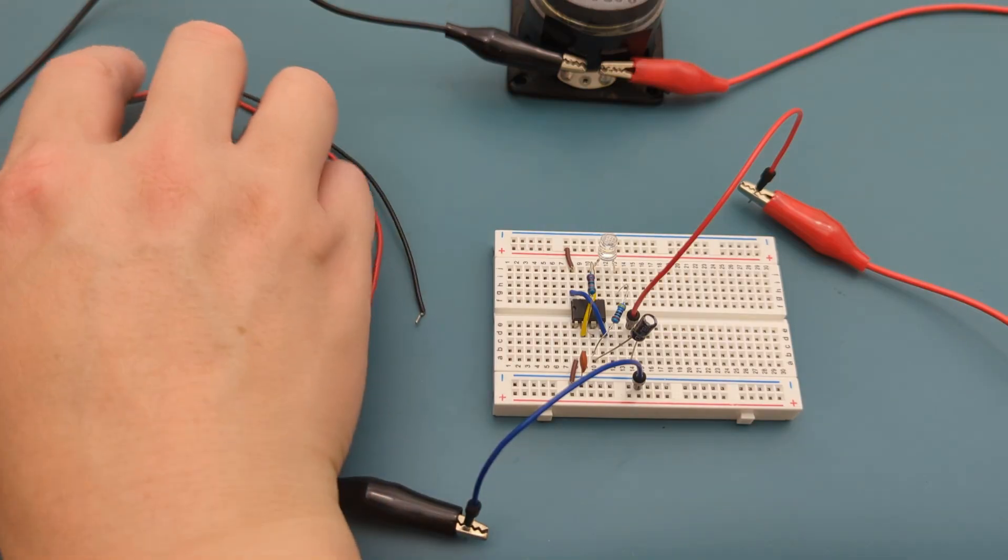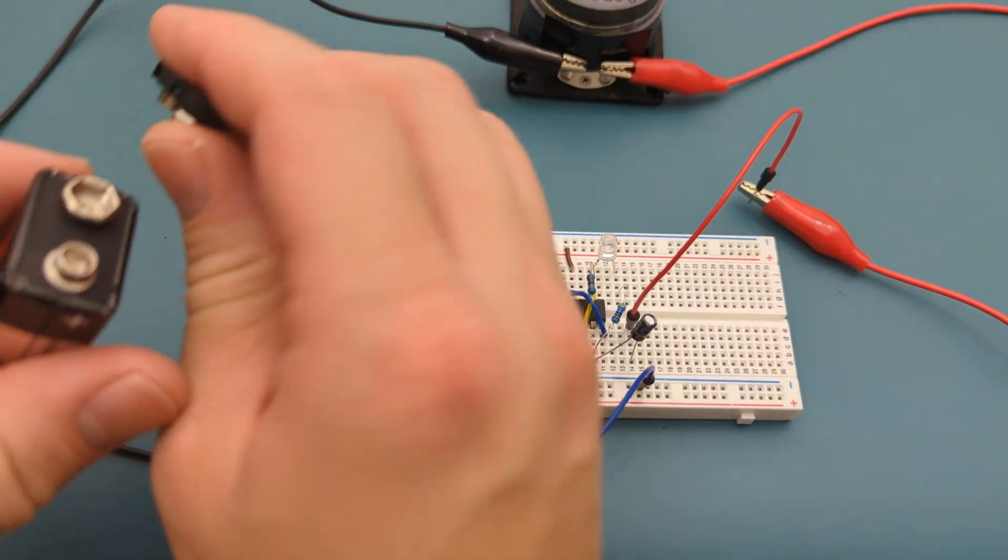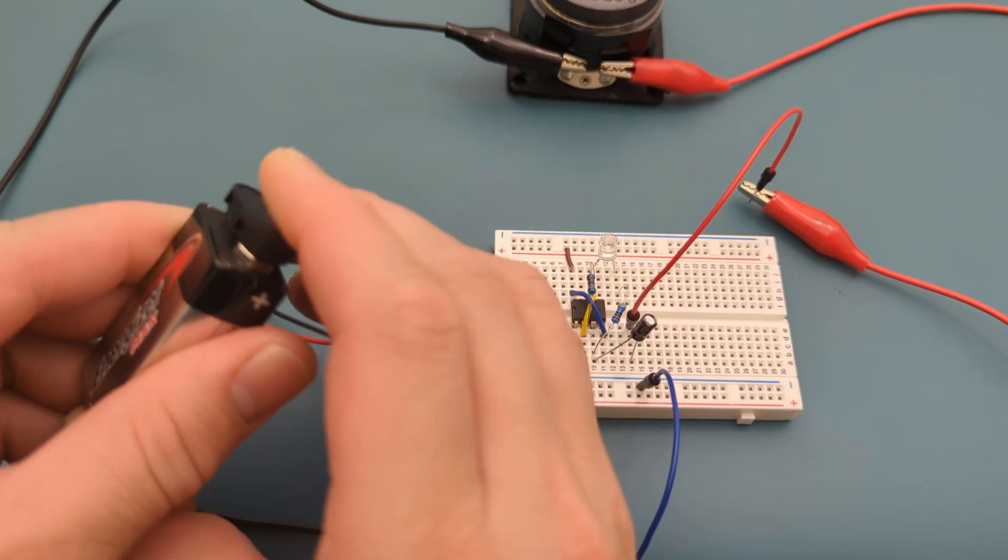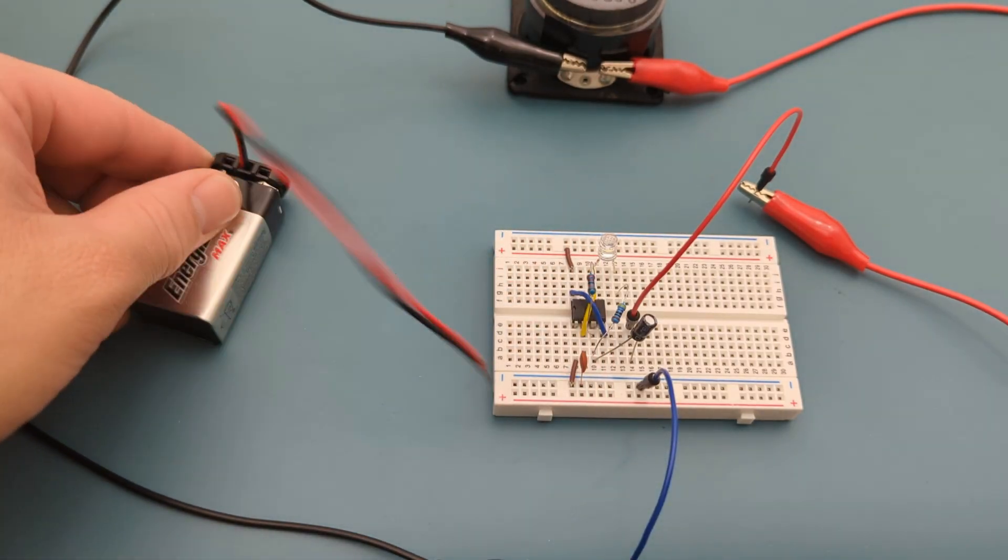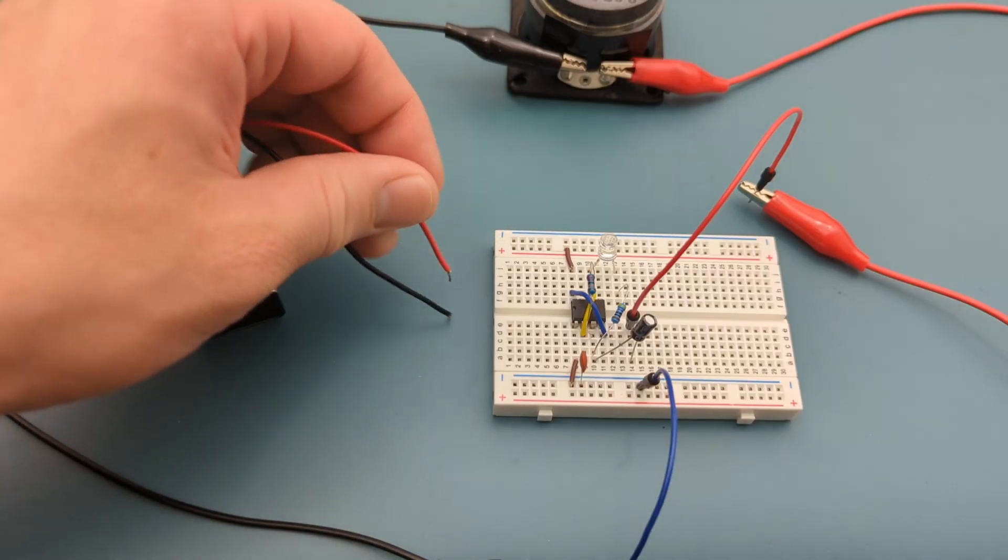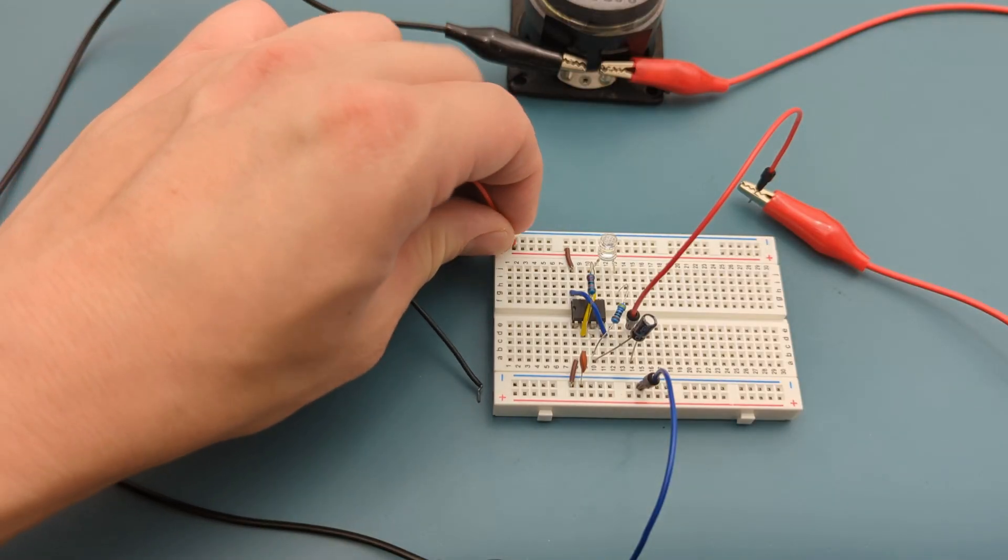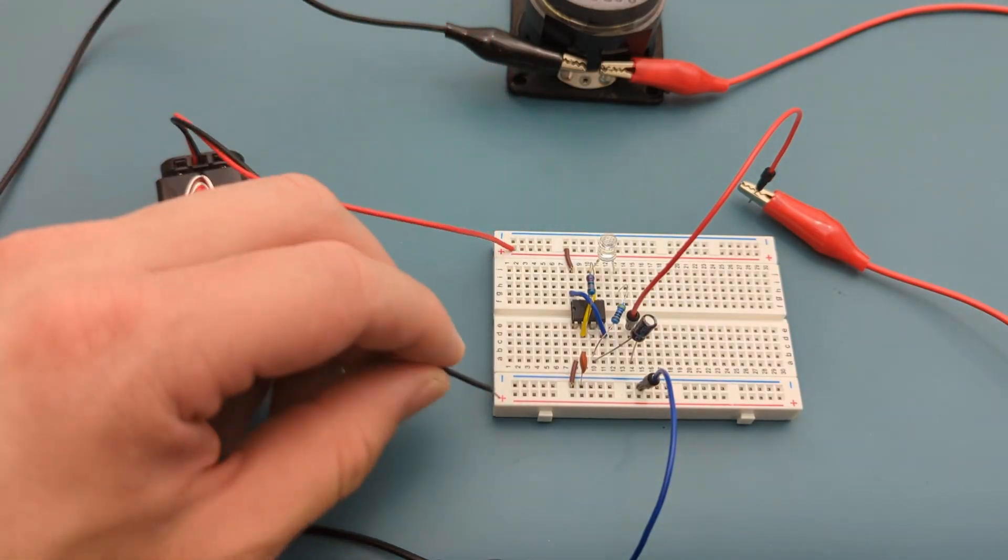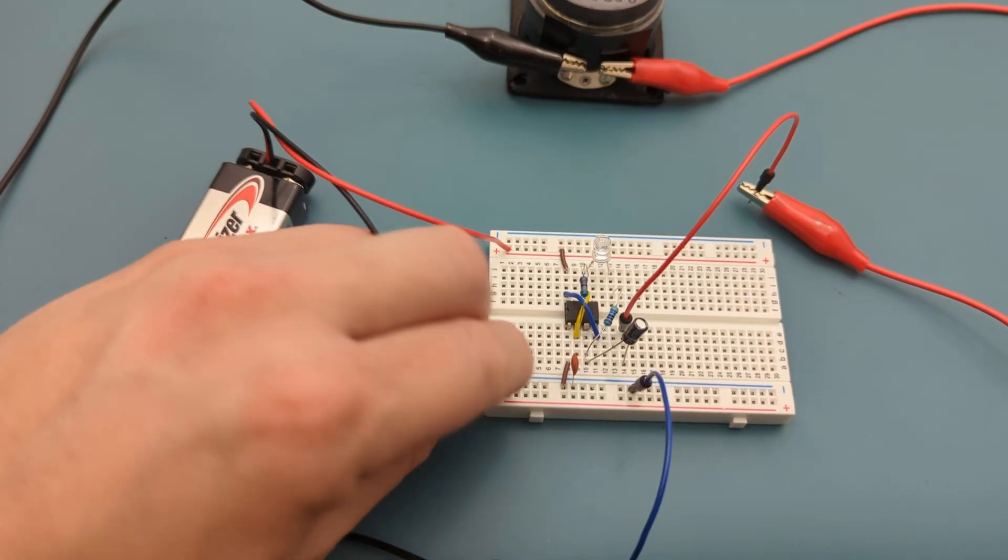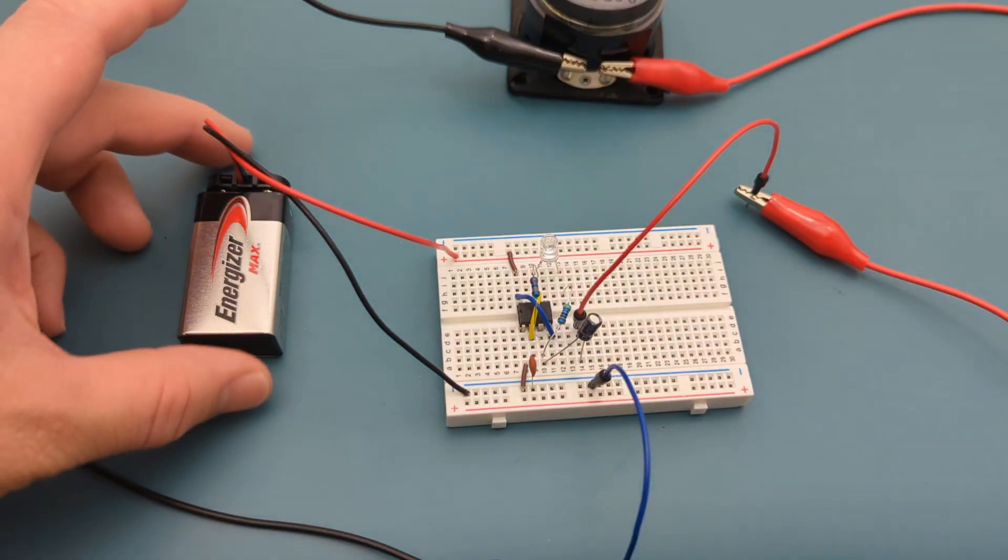Attach the buckle connector to the 9 volt battery. It's time to connect the power supply. Connect the positive lead of the battery holder to the positive rail. Connect the negative lead of the battery holder to the negative rail. We have successfully completed the circuit.